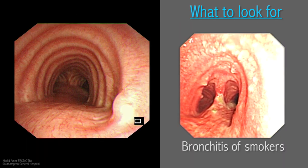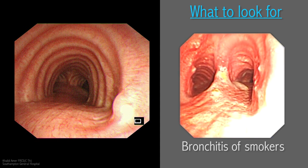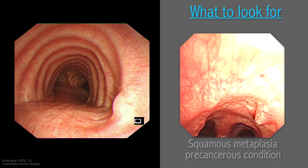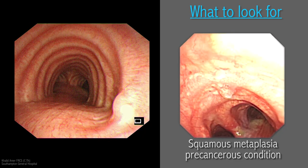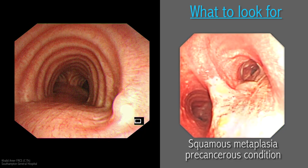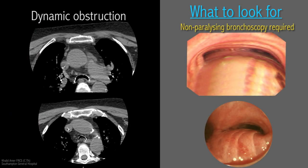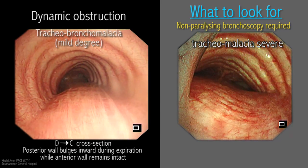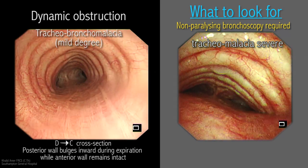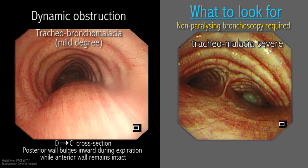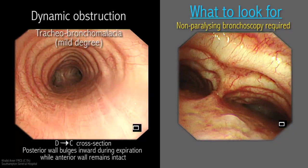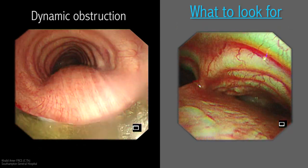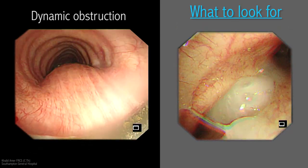Diffuse mucosal injection and thickening is seen in chronic smokers. Irritation of the tracheal mucosa by smoke leads to non-ciliated squamous metaplasia. Although benign, metaplasia in smokers can progress to lung cancer; random mucosal biopsy is usually non-contributory. Obstruction of the main trachea is either static or dynamic. In tracheobronchomalacia, the c-shaped cartilages are weak or destroyed, leading to flattening of the trachea in its transverse axis especially on coughing, so the D-shaped cross-section becomes a C-shape. In milder degrees, the membranous wall bulges inwards during expiration while the anterior wall remains intact. A non-paralysing anaesthesia is required to diagnose dynamic obstruction.